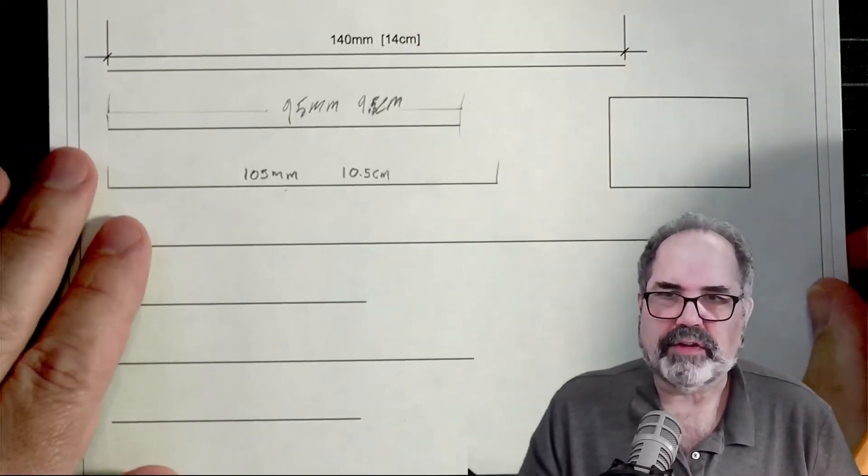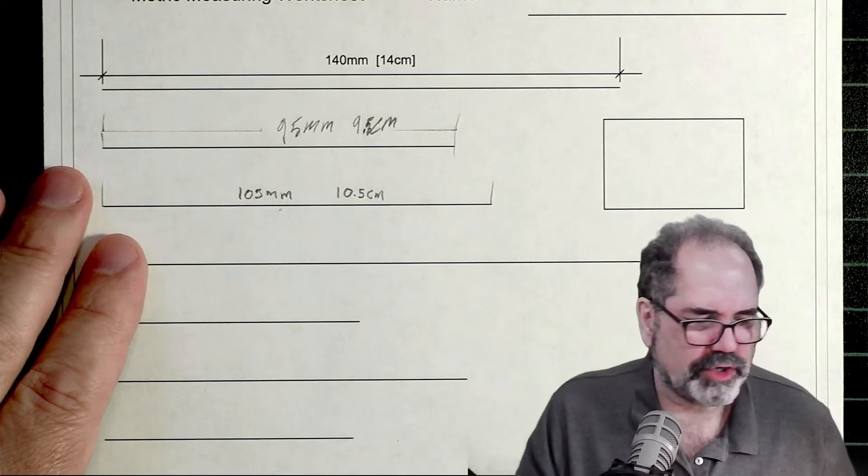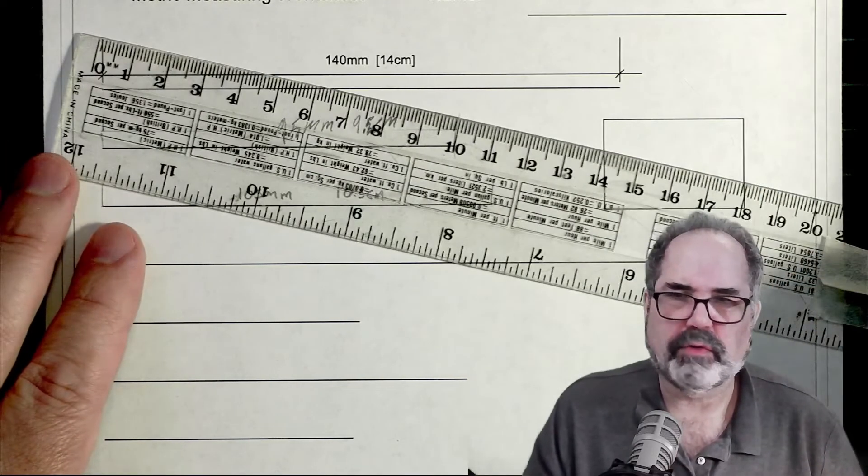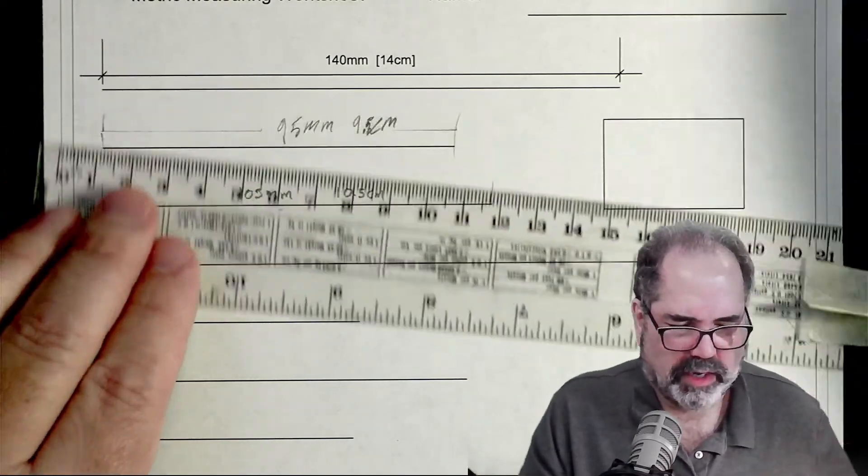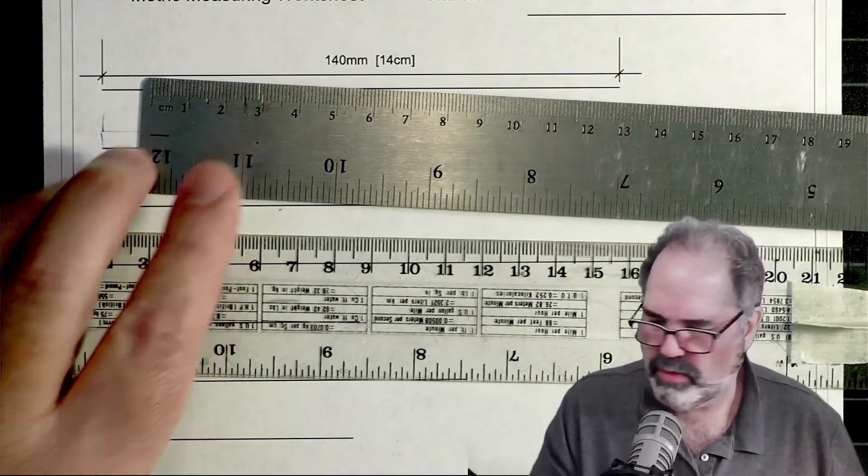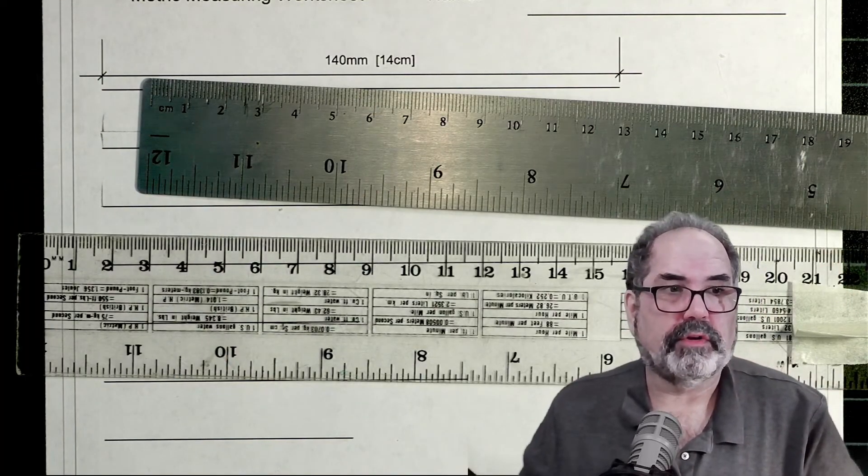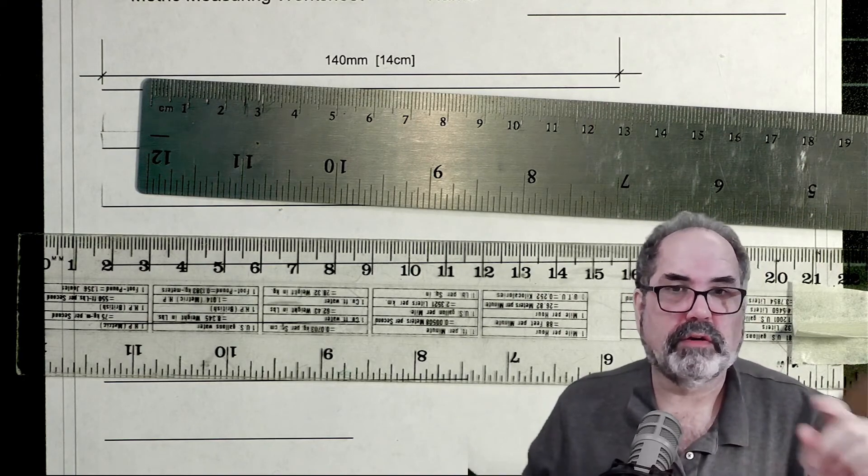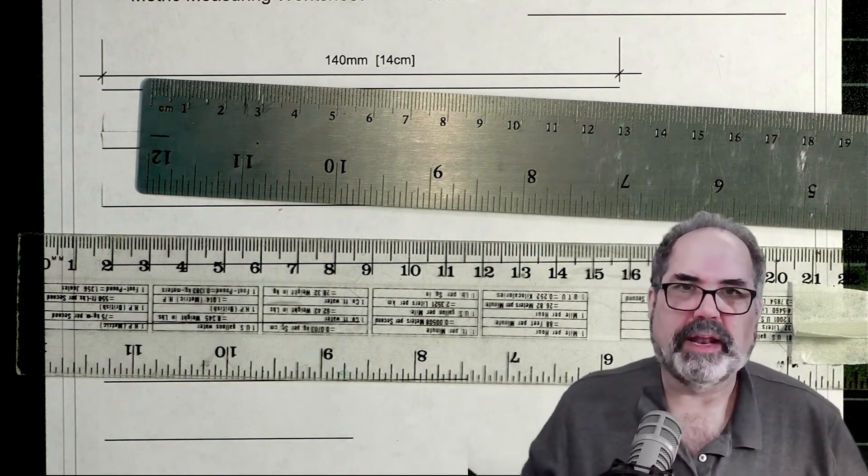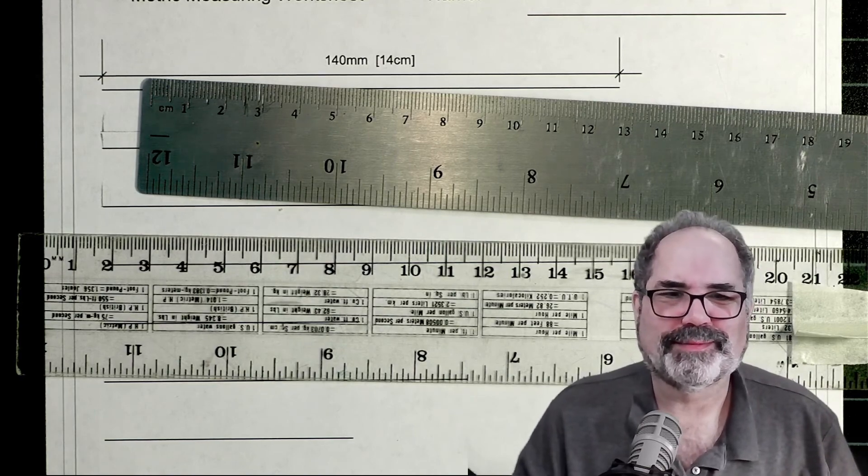But there you have it, so you can use this for your students or for yourself to practice your measuring, whether you're using this kind of ruler or a metal ruler that has centimeters. In my other videos I have videos on measuring imperial and a metric tape measure video. Check the cards at the end or the playlist, and have a great day. Thanks for watching. Bye bye.